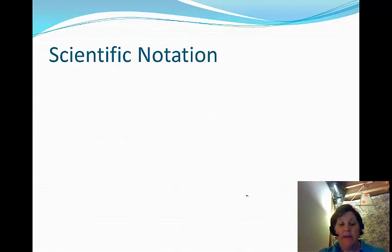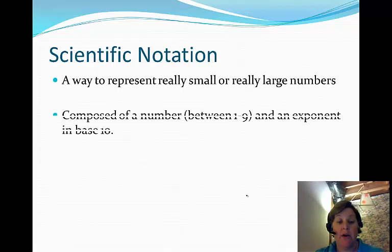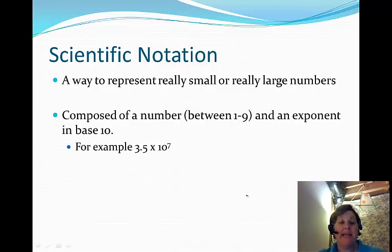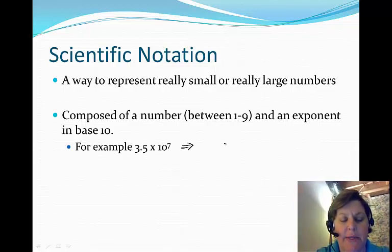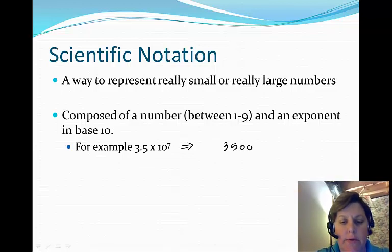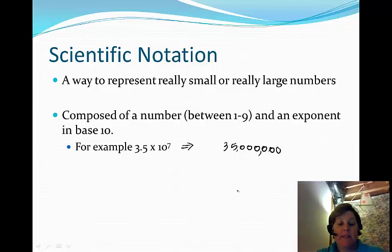Scientific notation. You, I'm sure, are used to seeing this from maybe a math class. And it's a way to represent really small or really large numbers. It's composed of a number between 1 and 9 and an exponent in base 10. So it might look something like 3.5 times 10 to the 7th. If we wanted to write that in standard notation, that, of course, means you move the decimal point 7 places to the right. So 1, 2, 3, 4, 5, 6, 7. That's the actual number, 35 million. And it's essentially a 35 with 6 zeros. So the 7 indicates we're moving 7 places to the right because it's a positive exponent. Negative exponents, of course, move to the left.